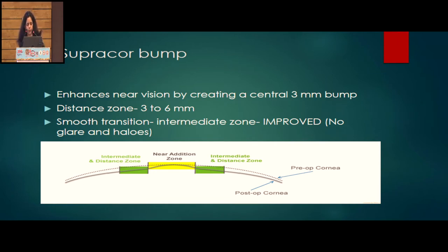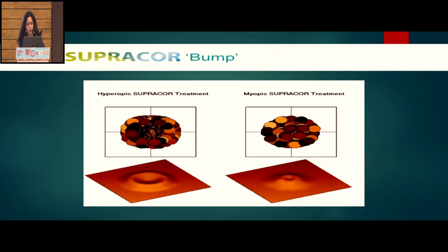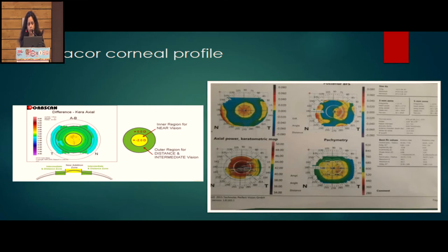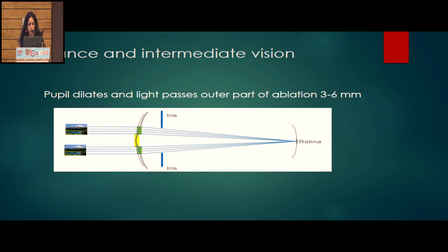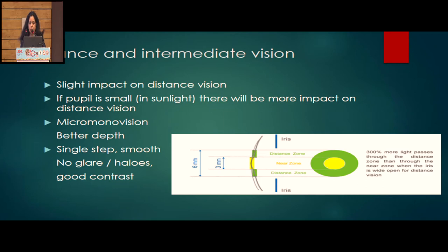These are the SupraCore bumps — you can see the central steepening. When reading, the pupil constricts and light passes primarily through the central cornea. When viewing for distance, the pupil dilates and the 3–6 mm zone becomes more active. The flip side: there is always a slight impact on distance vision because rays also pass through the central 3 mm during distance viewing, causing a slight one or two line impact. Hence the pre-op assessment — whether the patient tolerates this vision — and whether to do unilateral or bilateral treatment is critical.